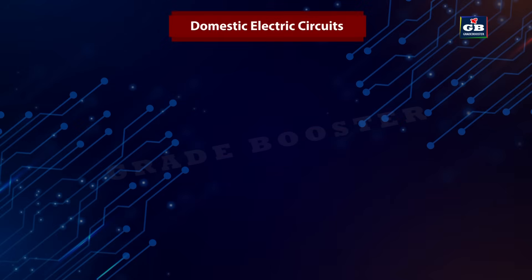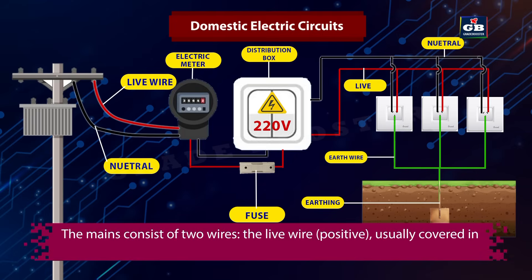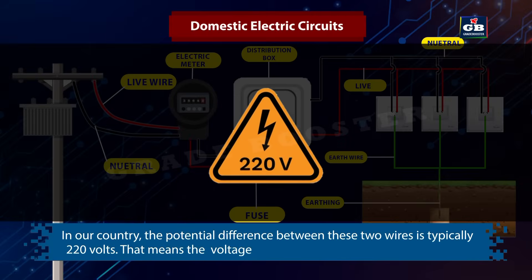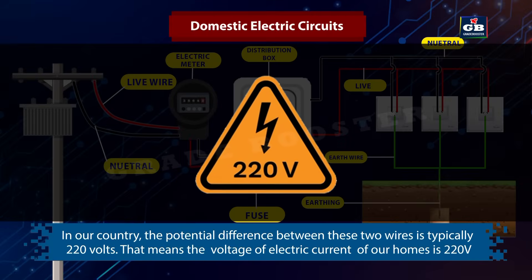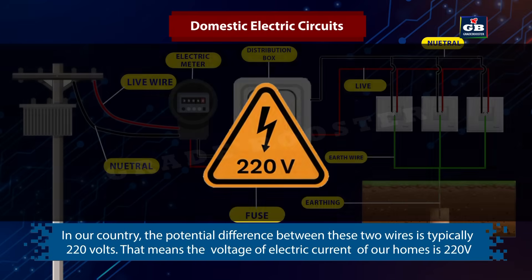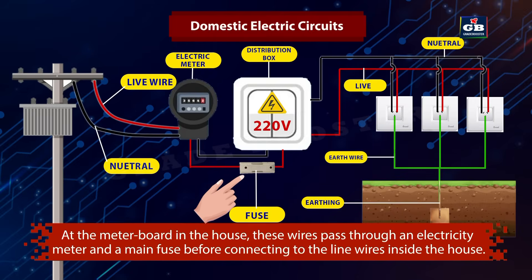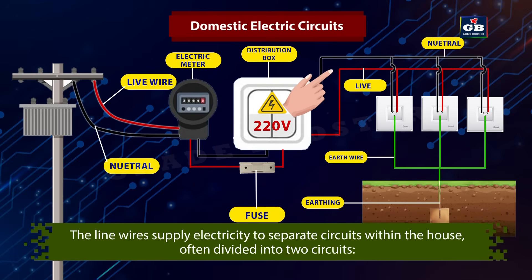Domestic electric circuits. Electricity is supplied to our homes through the mains, which consist of two wires: the live wire (positive), usually covered in red insulation, and the neutral wire (negative), typically insulated in black. In our country, the potential difference between the two wires is 220 volts. At the meter board in the house, the main wires pass through an electric meter and a main fuse before connecting to the line wires inside the house. The line wires supply electricity to separate circuits within the house.